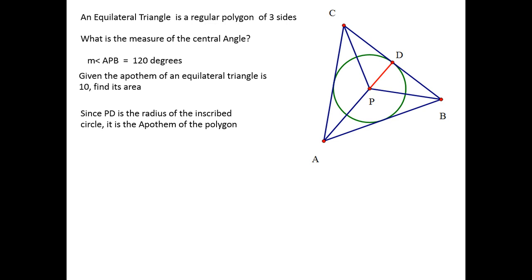PD is the radius of the inscribed circle, as well as the apothem of the polygon. I've taken that one triangle out, CPB. That angle there at P was 120, but with the apothem in place, it splits it into a 60. There it is, a 30, 60, 90.